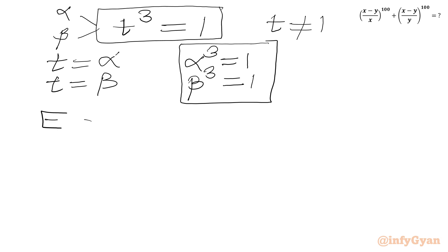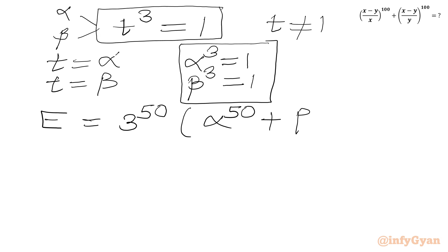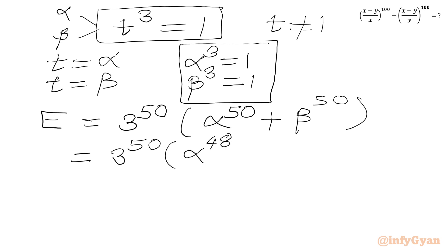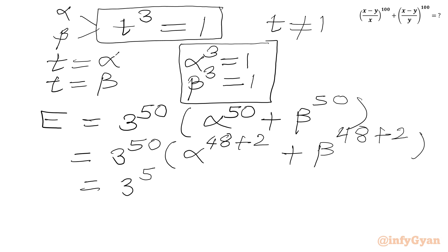Now we will write our required expression E which was 3 to the power 50 times, in bracket, alpha to the power 50 plus beta to the power 50. Using the exponent law I will write alpha to the power 50 as alpha to the power 48 plus 2, and similarly beta to the power 50 as beta to the power 48 plus 2. This equals 3 to the power 50 times, in bracket, alpha to the power 48 times beta squared plus beta to the power 48 times alpha squared.